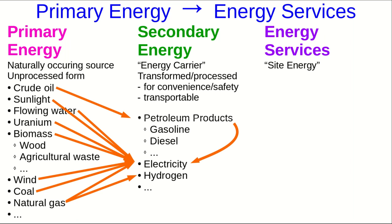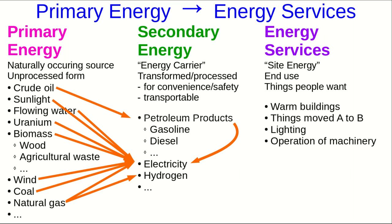Finally, our energy services. This sometimes goes by the term site energy. These are the end uses of energy, the things people actually want. Things like warm buildings, moving things around from place to place, lighting, maybe less obvious to you, but operation of machinery in places like factories and mines, and many other examples.